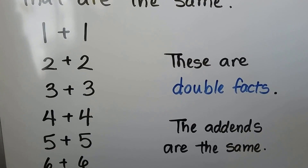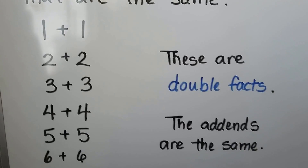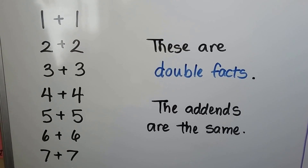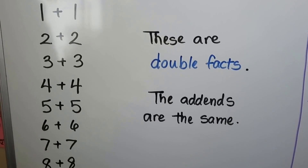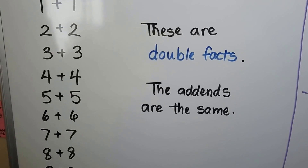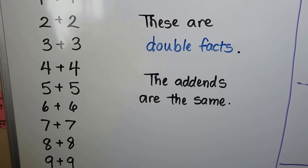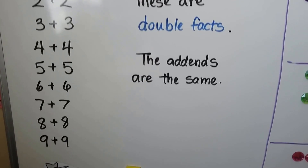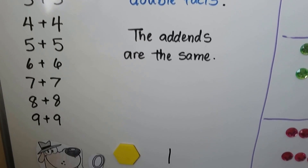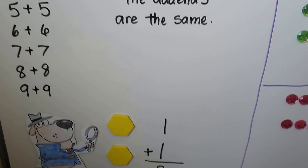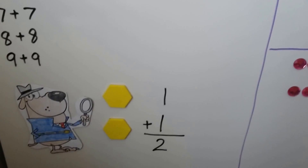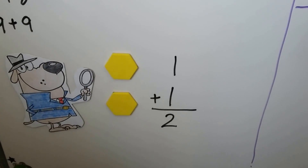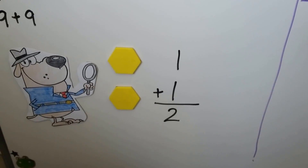Look at this. We have 1 plus 1 — the addends are the same. 2 plus 2. 3 plus 3. These are all double facts, and the addends are the same. We're adding the same number together.